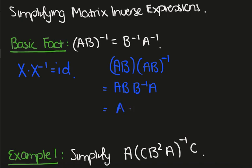So what we see is this is A times the identity, because B times B inverse is the identity, times A inverse. Then this is just A times A inverse and that's the identity because we assume A is invertible.